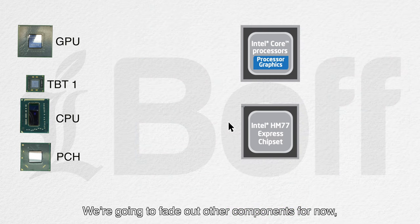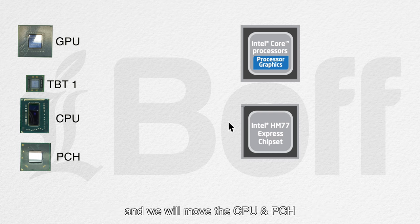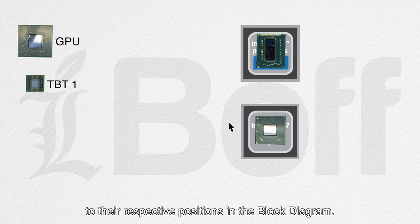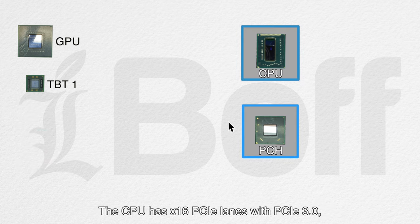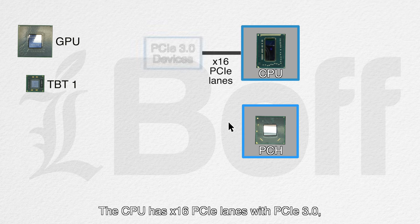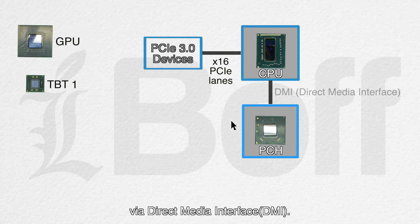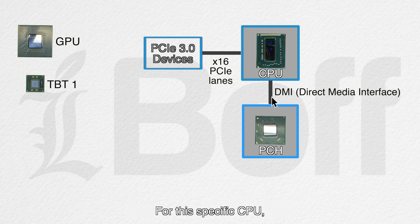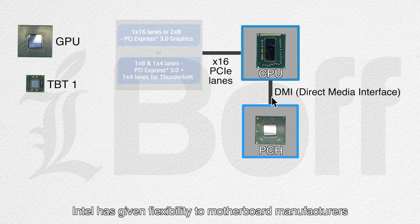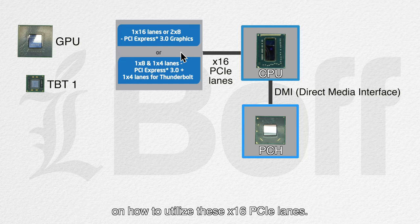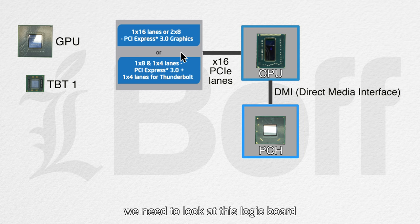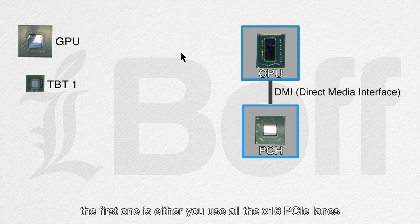This is the block diagram for the Mobile Intel HM77 Ivy Bridge Express chipset. We're going to fade out other components for now and move the CPU and PCH to their respective positions in the block diagram. The CPU has 16 PCIe lanes with PCIe 3.0, and the CPU communicates with the PCH via Direct Media Interface. For this specific CPU, Intel has given flexibility to motherboard manufacturers on how to utilize these 16 PCIe lanes.